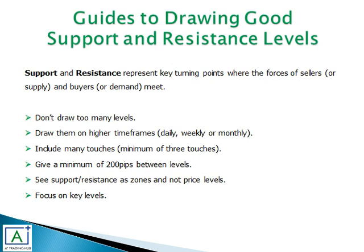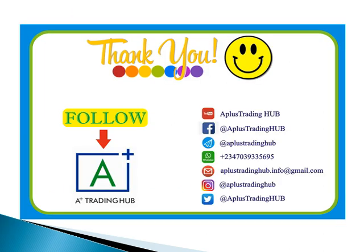Give a minimum of 200 pips between levels, include many touches, draw on higher time frames, don't draw too many levels, focus on key levels, and see them as zones. When you follow these six guides for plotting support and resistance, you always have a higher probability of winning your trades.